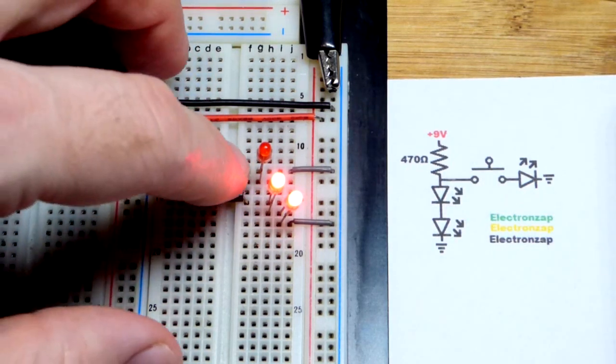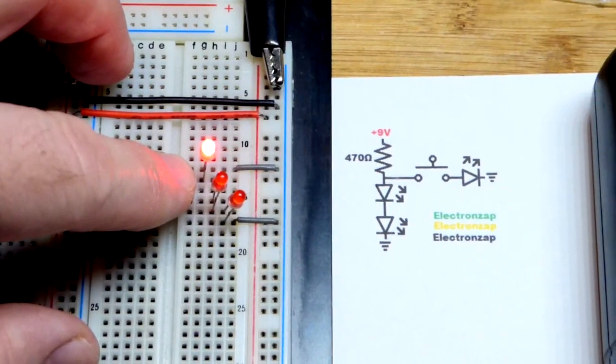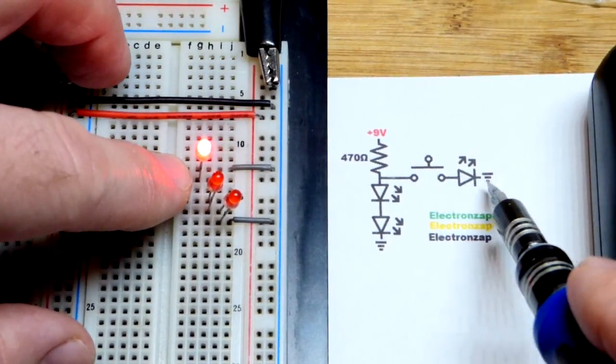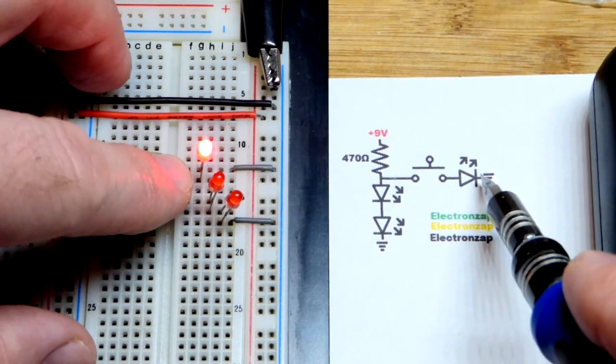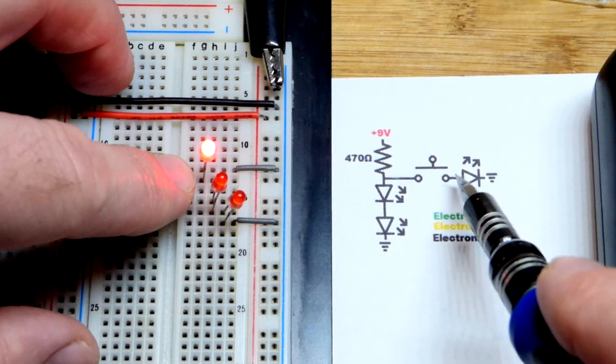And then when I press the push button switch, the other LED lights up. And the reason why is because it takes about a volt and a half before that LED starts conducting. When current really gets flowing good it builds up about 2 volts or so.